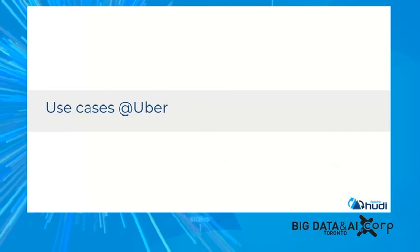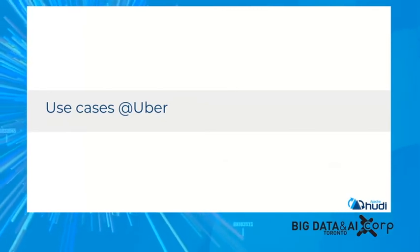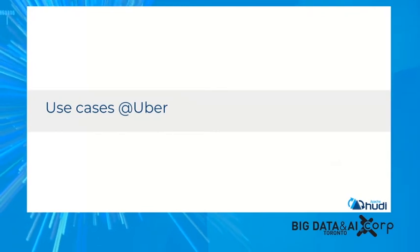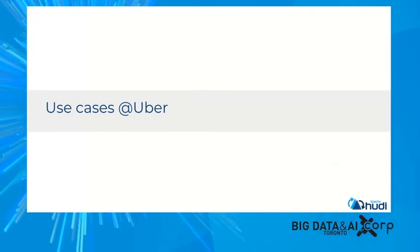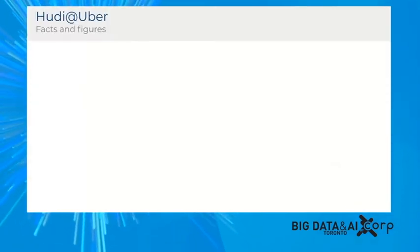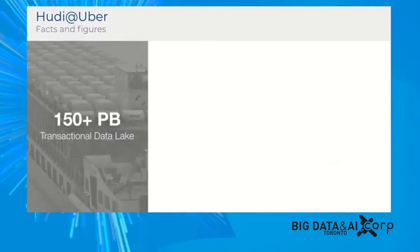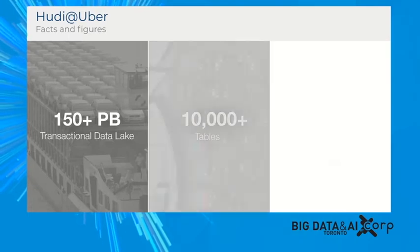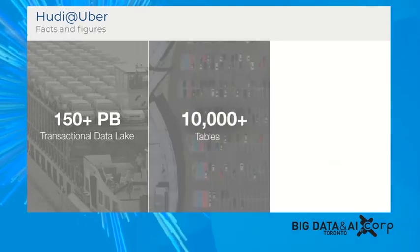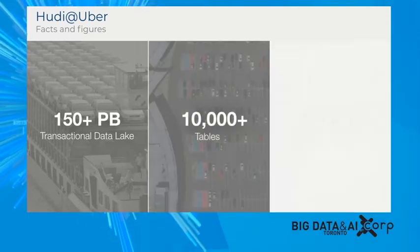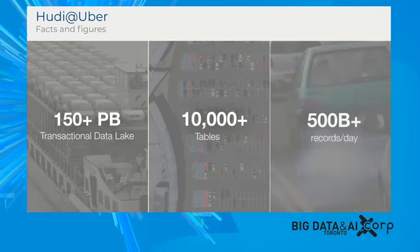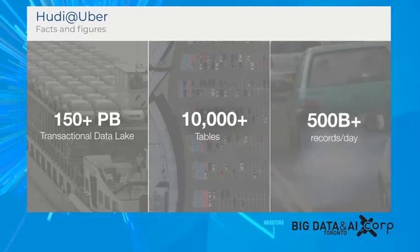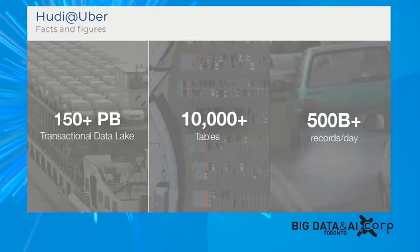I wanted to give some insight into Hudi use cases at Uber and the scale at which we run data systems. Hudi at Uber powers a 150-plus petabyte transactional data lake. We run and manage tens of thousands of tables every day and ingest over 500 billion records a day. These numbers are a few months old, so they may have changed recently.